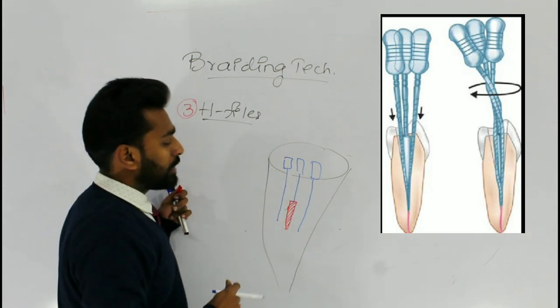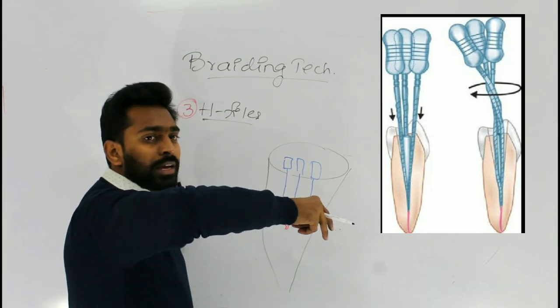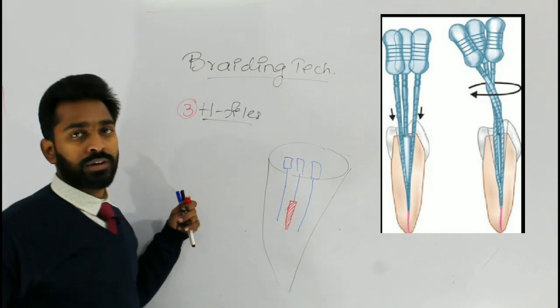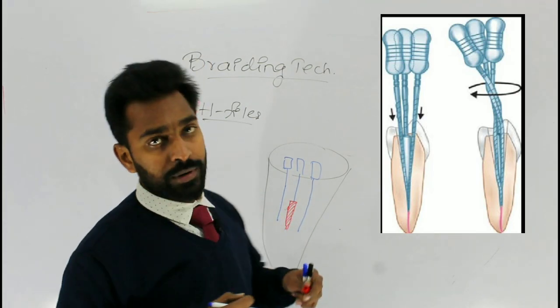After placing the H-files, try to twist all the three H-files at a time and try to pull it out from the canal orifices. Such that you can remove the separated instrument.